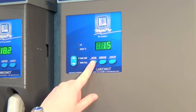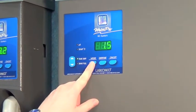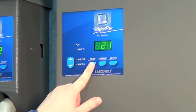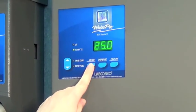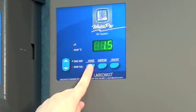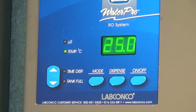Pressing the mode button allows the user to toggle between display modes to see the water purity, water temperature, or the current time dispense setting. The lights on the left indicate which mode is currently selected.